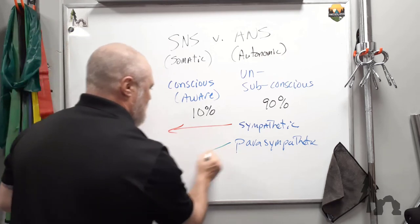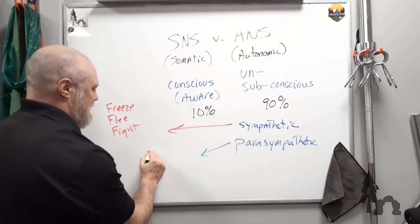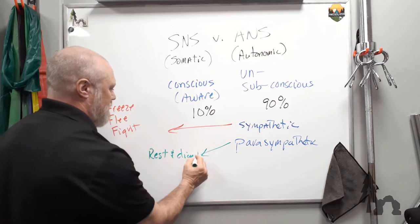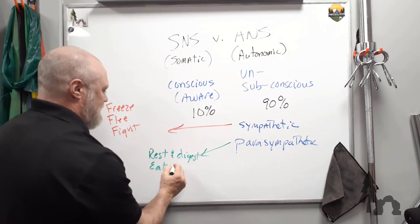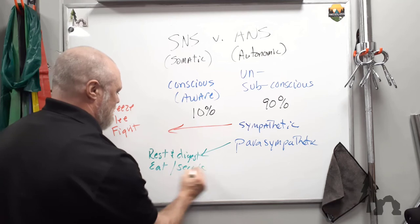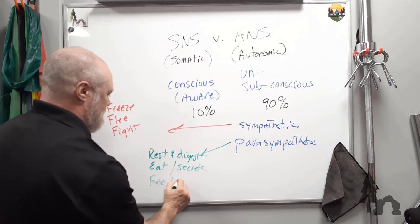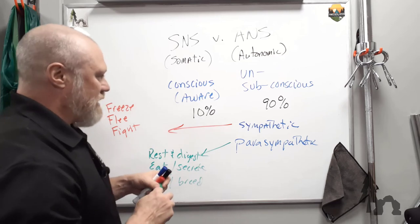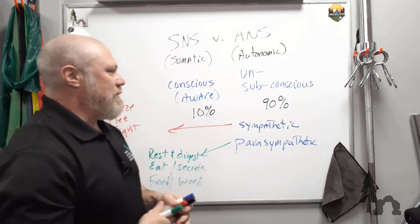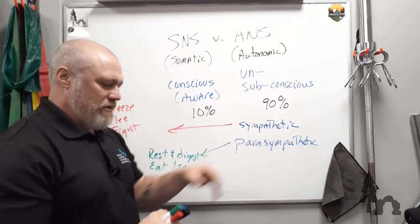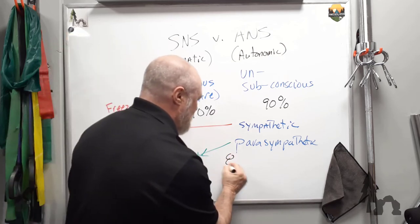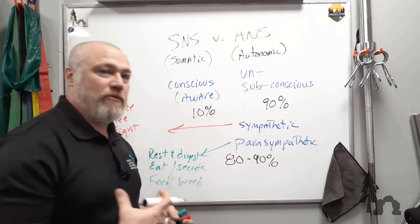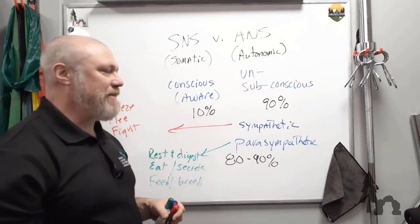The parasympathetic system is going to take care of everything else and is also known as the rest and digest system. Also, eat and secrete and feed and breed. So there's other ways to think about that. Think about your parasympathetic autonomic nervous system as the one that's running the show the majority of the time. Probably about 80% to 90% of the time in an ideal world, health and wellness, you would be in a parasympathetic dominant state